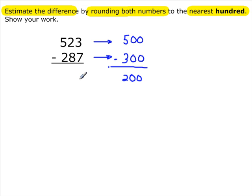So that's the answer is 200, along with the rounding of both numbers to the nearest 100.